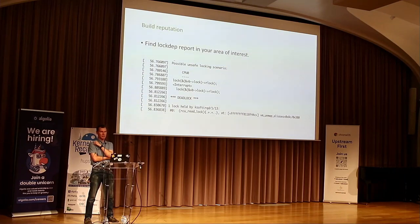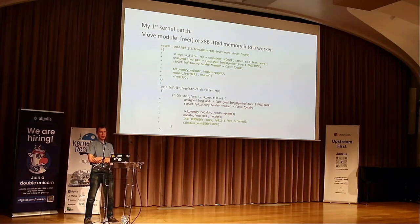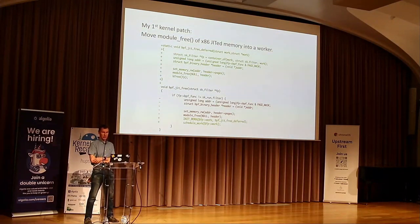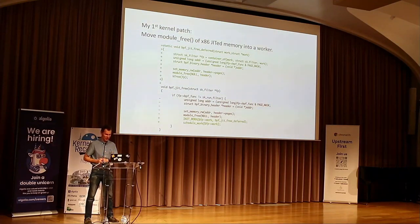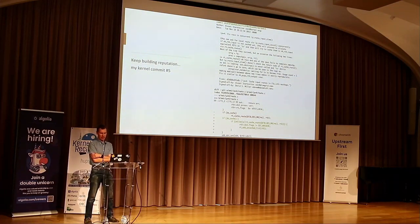The next step — another trick I used — is build a reputation. Though I had been developing kernel since '99, none of my patches were public. So I had to land the first one. I found a bug report saying x86 JIT was doing something wrong. My first official kernel patch was really simple — it just moves a module function that can't be called with preemption disabled into a worker thread. But the key point is that Eric, who wrote x86 JIT at the time, had to review and accept it, and Dave had to apply it.